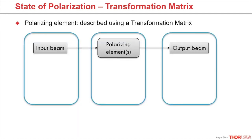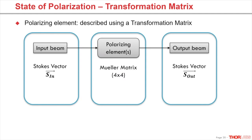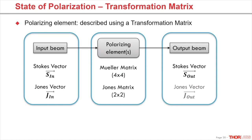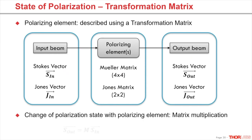Any polarizing element can be described by a transformation matrix. For the four-element Stokes vector, a 4 by 4 real-element Müller matrix is used to describe a polarizing element. In Jones calculus, there is a complex 2 by 2 Jones matrix equivalent. For calculating the output polarization vector, the input vector and the matrix must be multiplied.